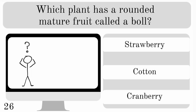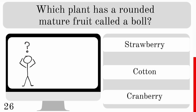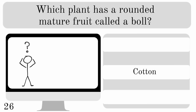Which plant has a rounded mature fruit called a boll? Is the answer strawberry, cotton or cranberry? The correct answer is cotton.